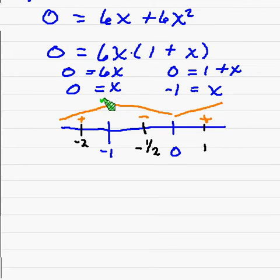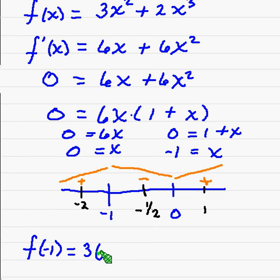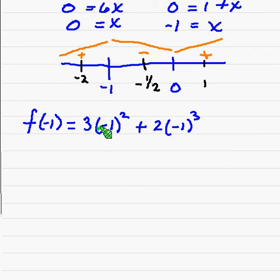Now to find the actual point on the graph, you just take negative one and plug it directly into the function. So f of negative one is equal to... I have forgotten what the function was, okay, so 3 times negative one squared plus 2 times negative one cubed. This becomes 3, and negative one cubed is negative one, and negative one times two is just negative two. So this just becomes 1. Therefore at negative one our y value is 1, and we said that this was a maximum.